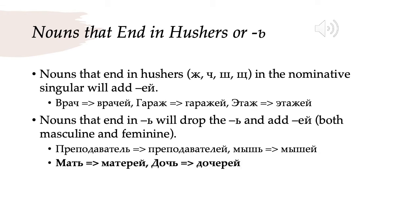Next we have nouns that end in a husher or мягкий знак, and these can be either masculine or feminine — it doesn't matter, they take the same endings. So if they end in a husher — ж, ч, ш, or щ — and all of these are going to be masculine, we will add -ей in the genitive plural. So врач, doctor, becomes врачей; гараж, garage, becomes гаражей; этаж, floor or story of a building, becomes этажей. If the noun ends in a мягкий знак in the nominative singular, we will drop the мягкий знак and add -ей for the genitive plural for both masculine and feminine nouns. With the genitive plural, the gender doesn't really matter — it's just the ending that matters.